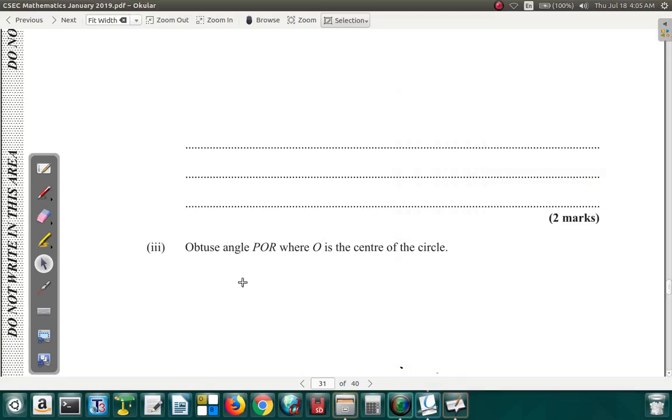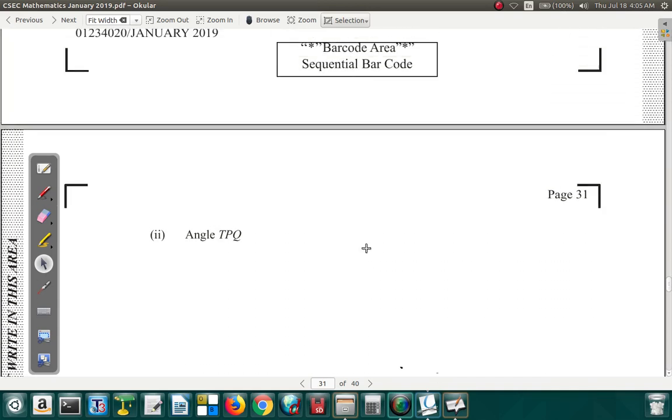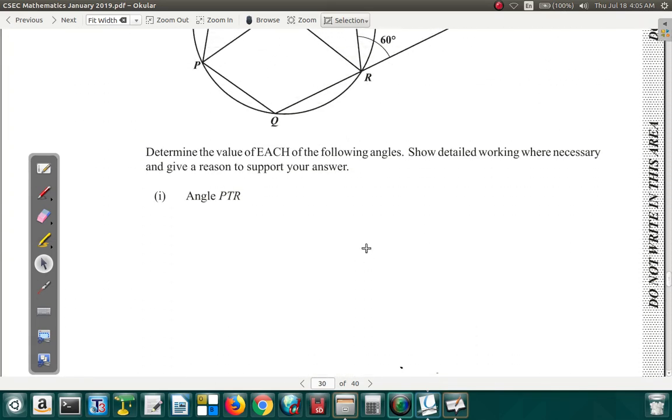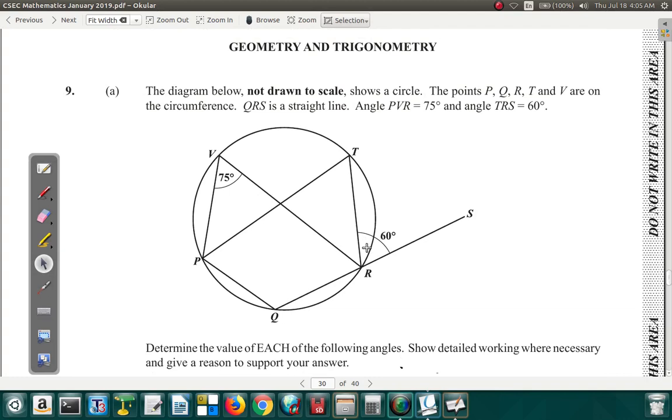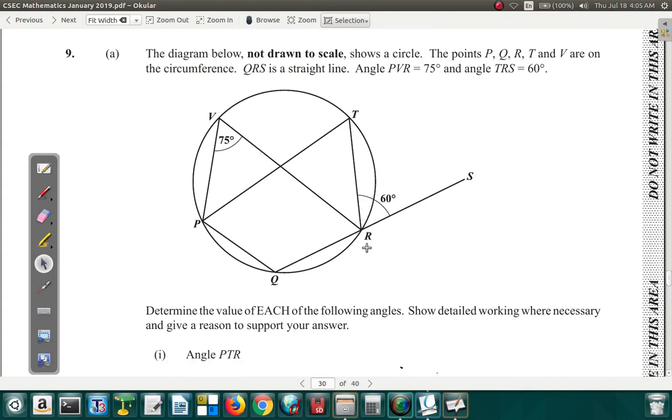Here they want for part three of question nine, the obtuse angle POR where O is the center of the circle. So POR, let's look back at the diagram. Oh I said question eight, it's question nine. So they want the angle POR.